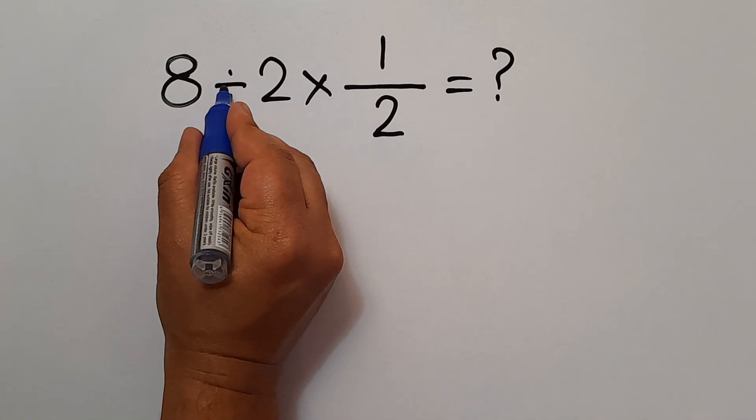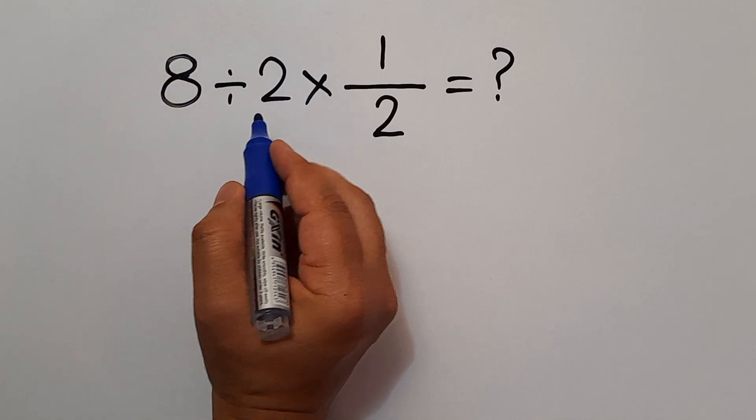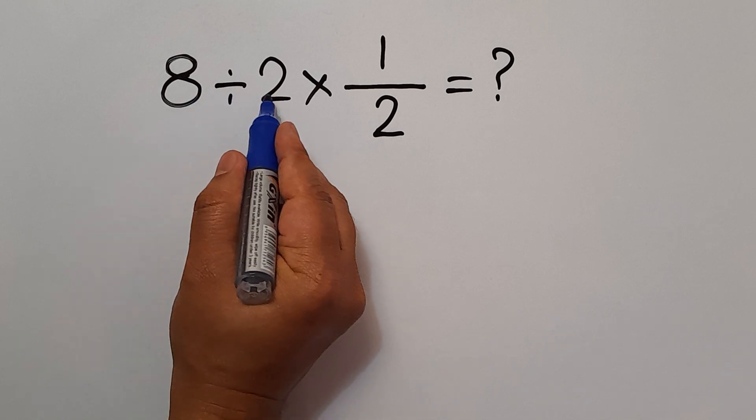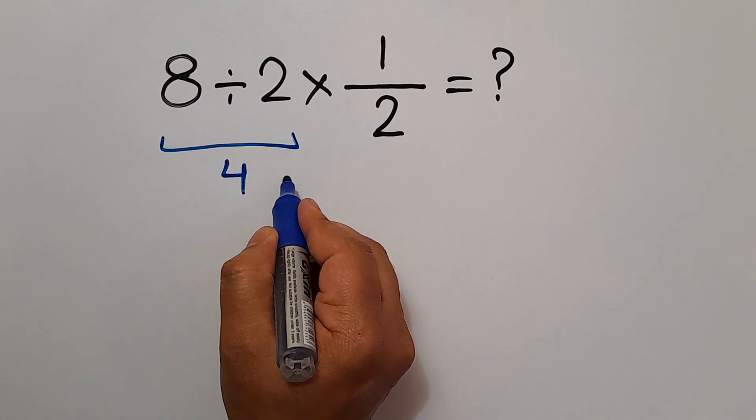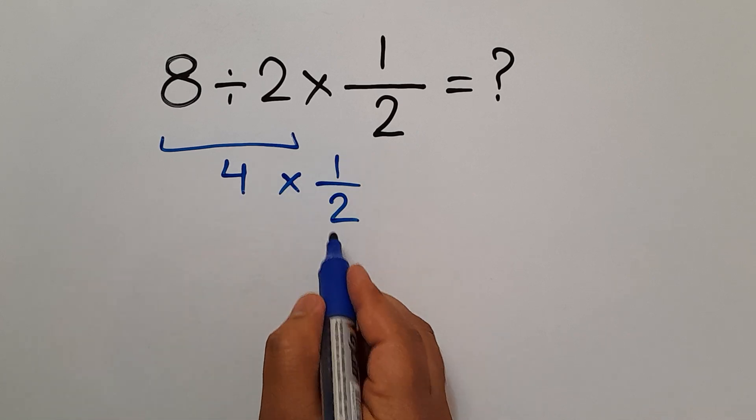Multiplication and division have equal priority and we have to work from left to right. So first we have to handle this division: 8 divided by 2 gives us 4, and 4 times 1 over 2.